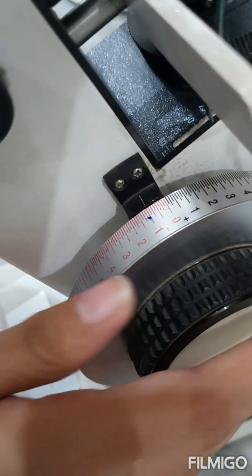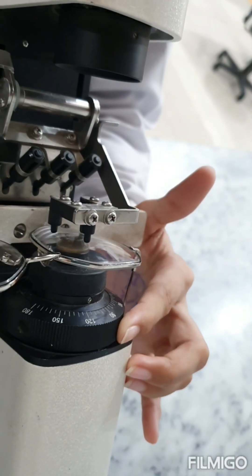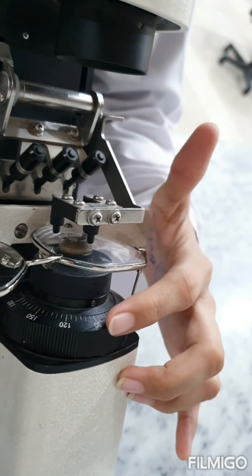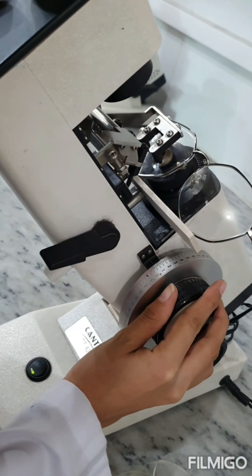Now rotate the axis wheel such that the central dotted lines lie in a parallel orientation to the bright meridian. The next step is to rotate the power drum where the bright meridian becomes more sharp and now note the power obtained.